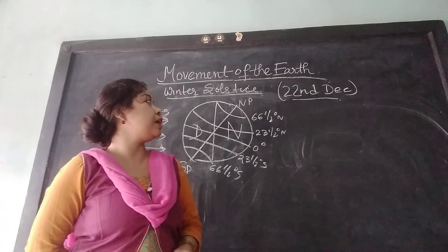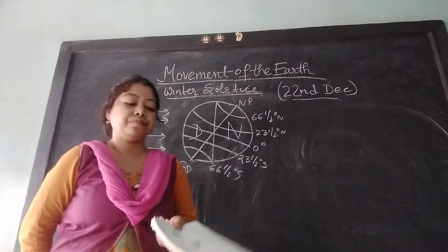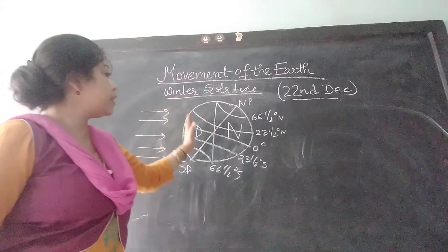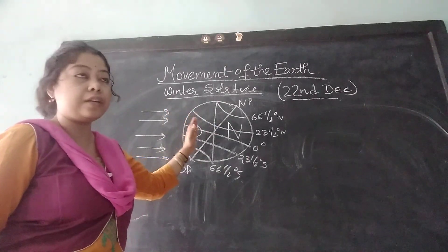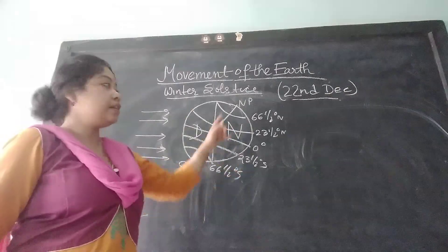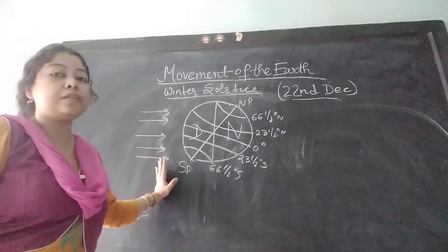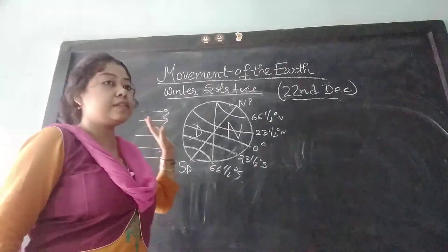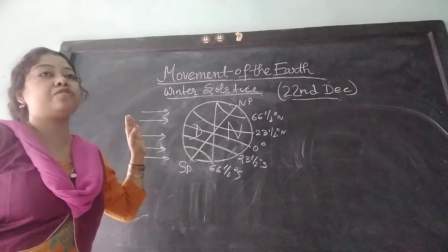This position is known as winter solstice. Looking at the diagram: the direct rays of the Sun are falling here — this side is day, the other side is night. The North Pole is away from the Sun, the South Pole is towards the Sun, and so the days are longer, nights are shorter, and temperature is higher.